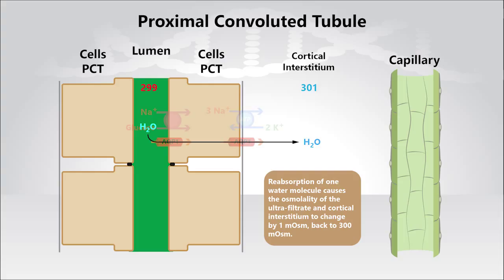Now, the reabsorption of one water molecule will cause the osmolality of the ultrafiltrate and cortical interstitium to change by one milliosmol, from 299 back to 300 milliosmols for the ultrafiltrate, and from 301 to 300 milliosmols for the cortical interstitium.